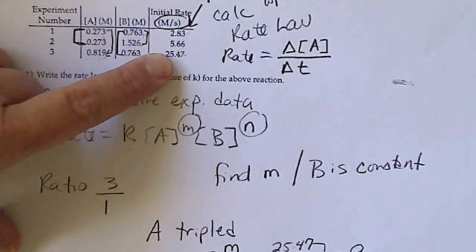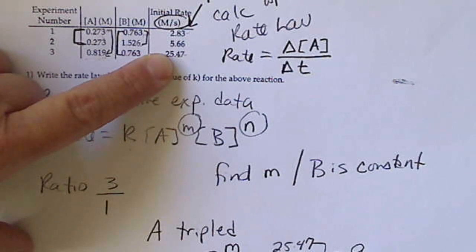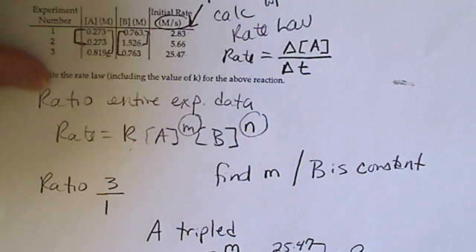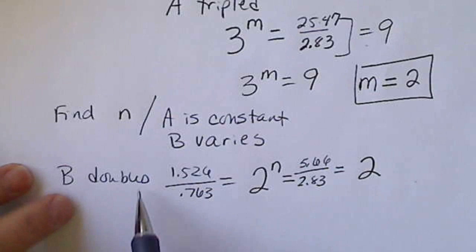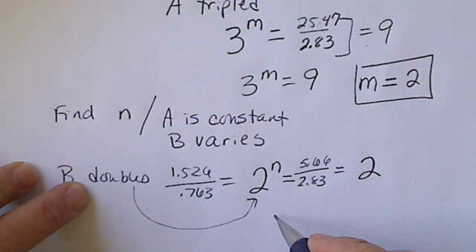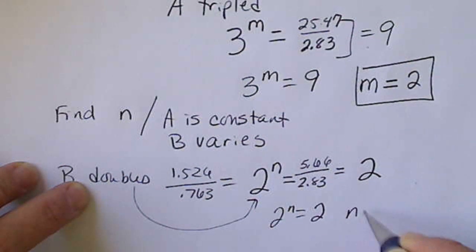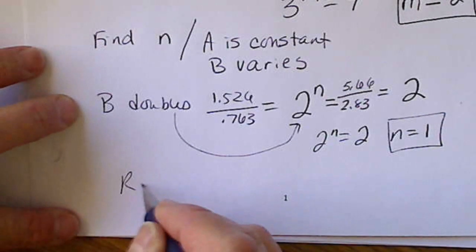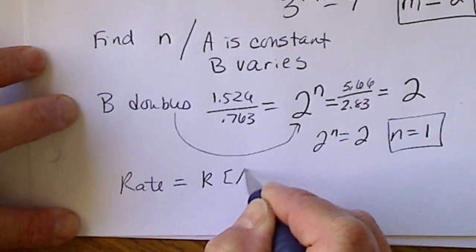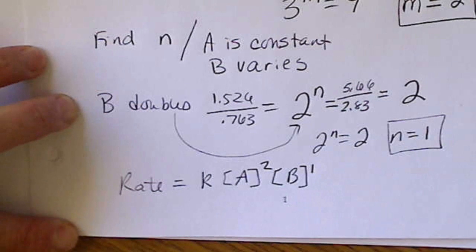Dividing the corresponding rates gives us a value of approximately 2, so 2 to the N equals 2, meaning N equals 1 — B is first order.